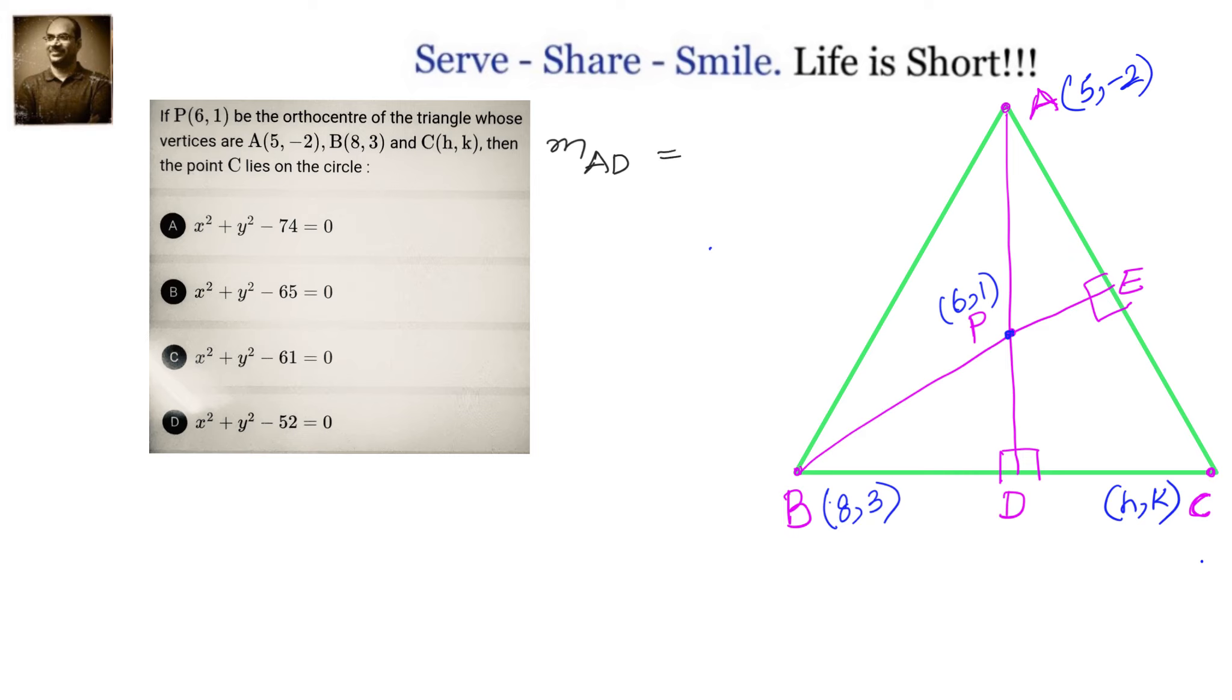For that, since we know the slope of AD, because we know point A and point P which is orthocenter, two points we know, we can use the formula y2 minus y1 by x2 minus x1 and find out the slope, which is 1 plus 2 by 6 minus 5, which equals 3.